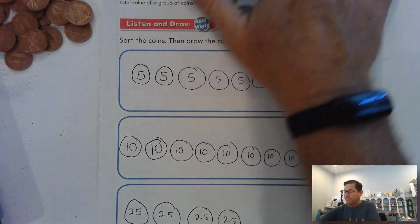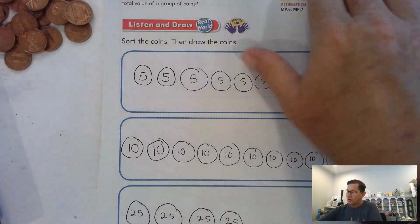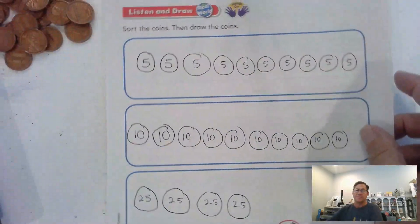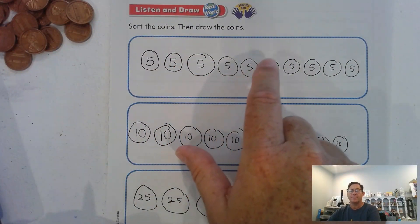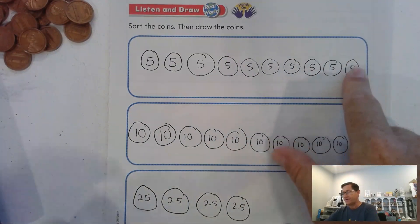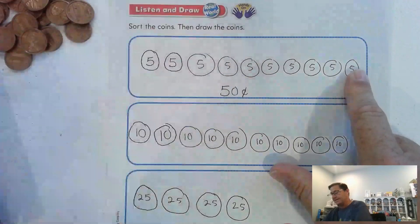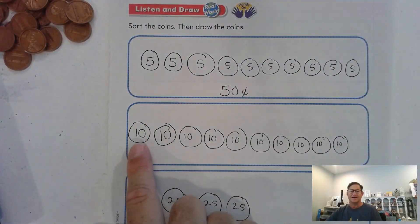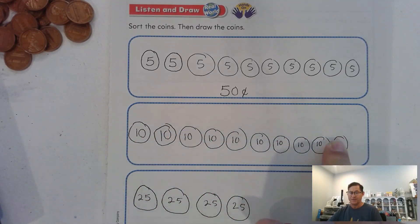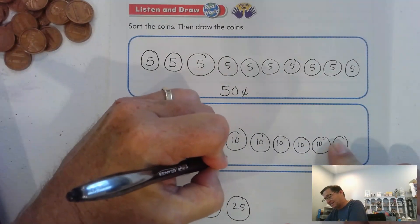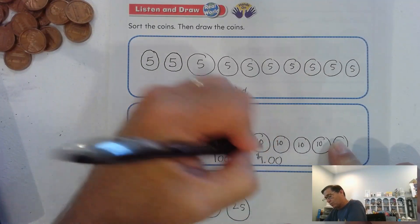So that's all I wanted you to do, was sort those coins and write their values. Now if we could go one step further and count these to find out how much we had: 5, 10, 15, 20, 25, 30, 35, 40, 45, 50, 60, 70, 80, 90, 100. So we have a hundred cents, or one dollar in quarters.